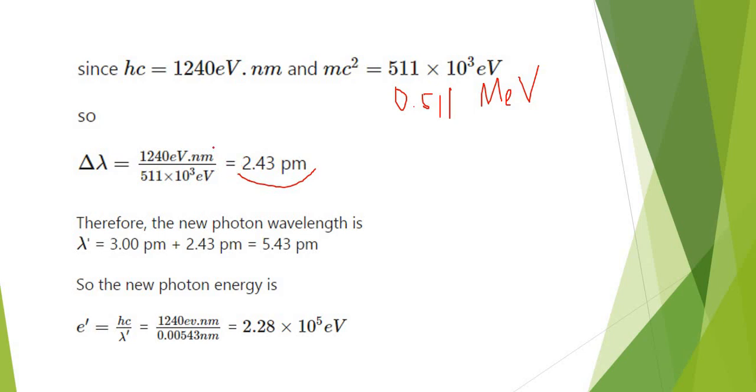Actually, if you don't calculate this, it's always 2.43 picometer. Taking the initial wavelength 3 picometer plus 2.43 picometer, you're going to get 5.43 picometer. The new photon energy is becoming E prime. You're going to have to put the prime here because the prime is after the collision. This is the after collision photon.